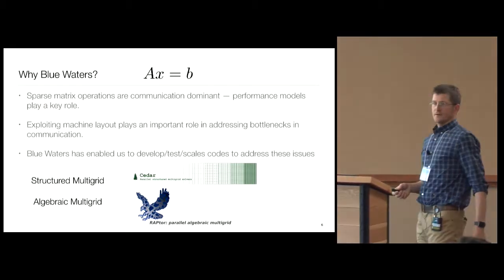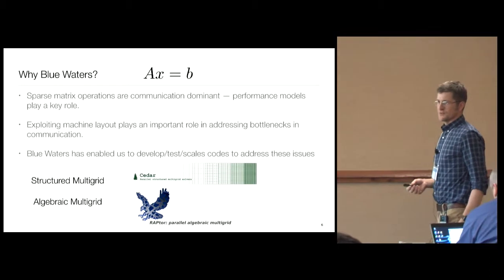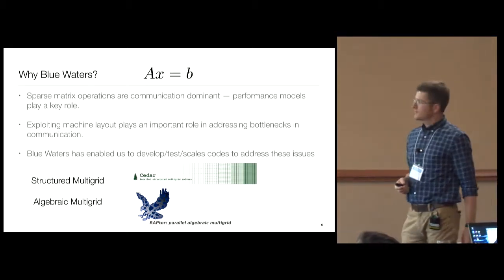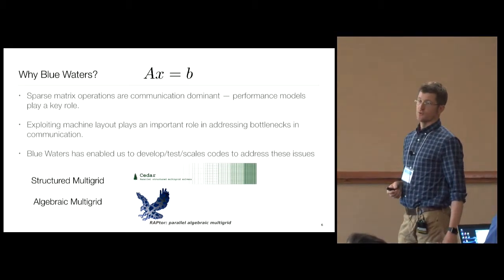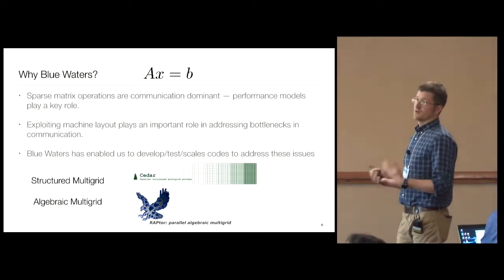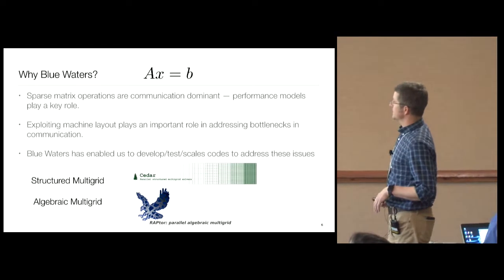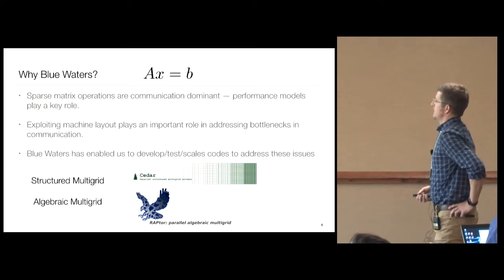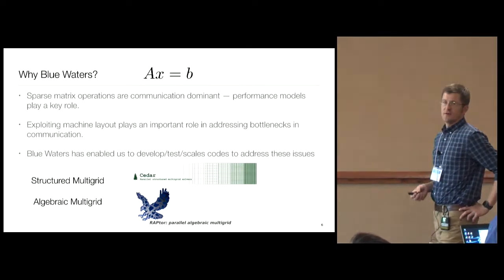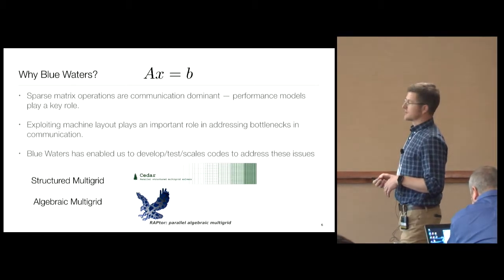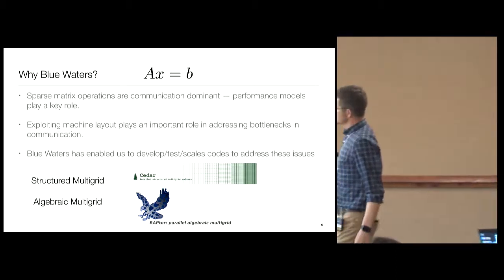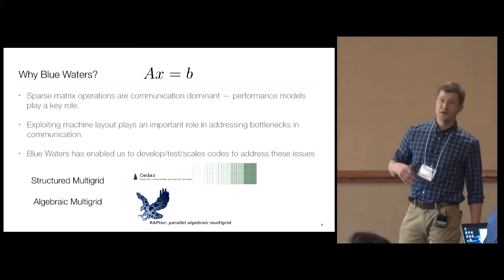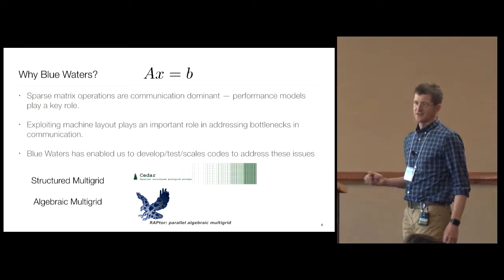So here's the underlying problem. It's pretty simple: AX equals B. We're going to get into the weeds on this a little bit. The sparse matrix operations are communication dominant. Performance models here play a key role. Blue Waters allowed us to develop very clean performance models to study this. Exploiting the machine layout is going to play an important role in order to minimize these types of communication bottlenecks. Blue Waters enabled us to test, develop, and actually scale these codes in a very clean way where we could study them. We have two packages that came out of this Blue Waters work: a structured multigrid solver and an unstructured multigrid solver.